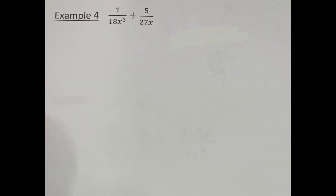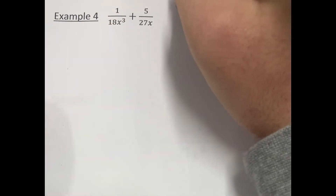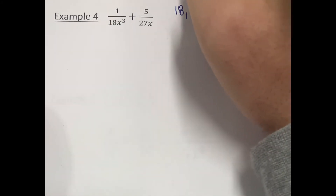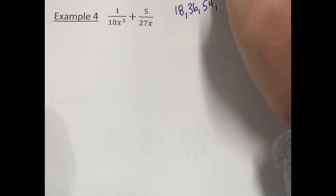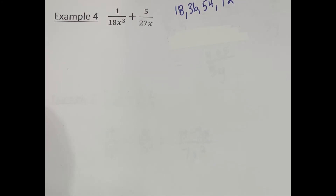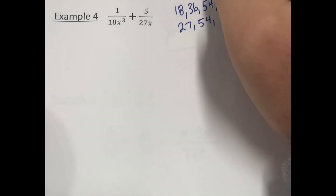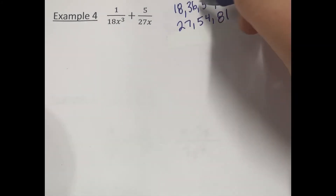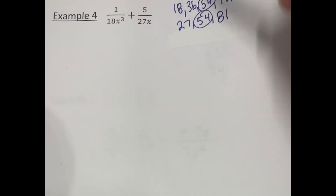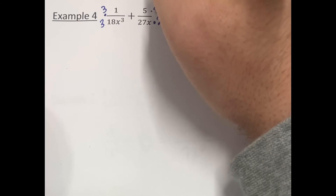In our fourth example, we want to get the denominators the same, but we have an 18 and 27 — we have coefficients this time. So we want to find the least common multiple of those to find the least common denominator. The multiples of 18 are 18, 36, 54, 72. The multiples of 27 are 27, 54, 81. The smallest number these multiples have in common is 54. So 18 times 3 is 54 — we multiply the top and bottom of that fraction by 3. And 27 times 2 is 54 — we multiply the top and bottom of that fraction by 2.